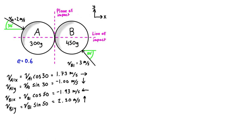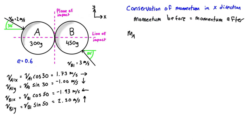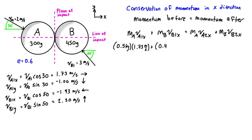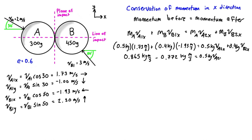To get started, the first thing we want to do is apply conservation of momentum in the x-direction. Momentum before equals momentum after. In the x-direction, that means we have ma times va1x plus mb times vb1x — that's the momentum before — equal to ma times va2x plus mb times vb2x. We can fill in the x-components we just calculated and simplify to find the left side is 0.093 kilogram meters per second, which is the momentum of our system before impact.